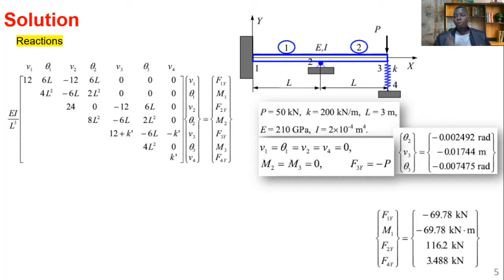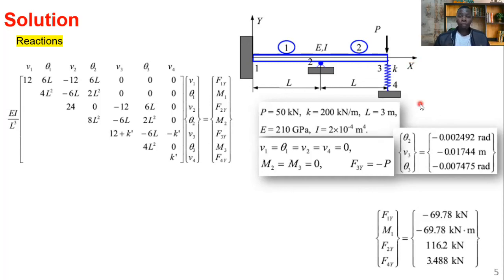As a discussion question: what do you think would have happened if the spring were oriented at an angle or applied in a different direction? Would you still have been able to add it directly as we did, or would the orientation of the spring have required a transformation? Let me know in the comment section, along with any other questions. Thank you for watching — until the next episode, bye bye.